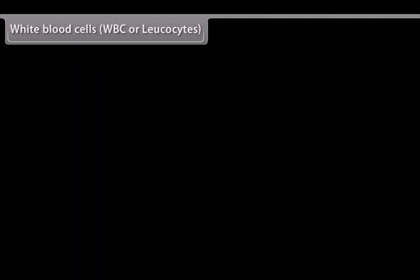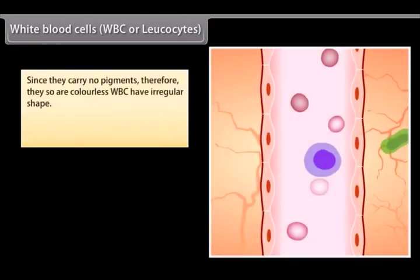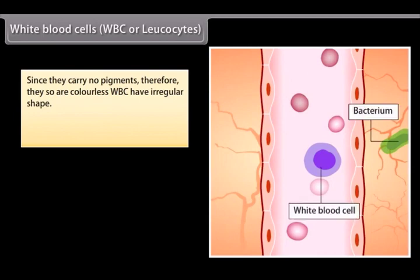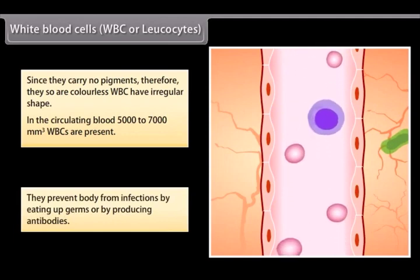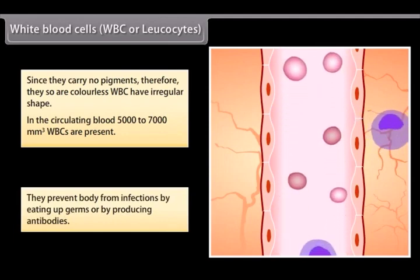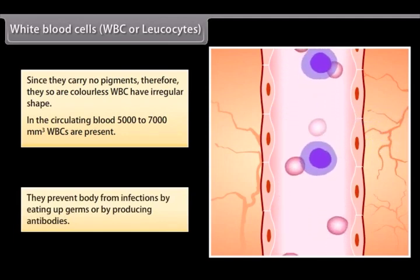White blood cells, WBC or leukocytes. Since they carry no pigments, therefore they are colorless. WBC have irregular shape. In the circulating blood, 5,000 to 7,000 per mm cube WBCs are present. They prevent body from infections by eating up germs or by producing antibodies.